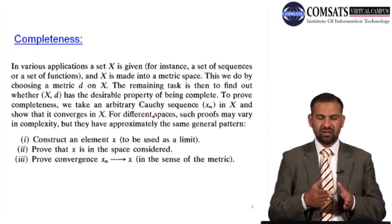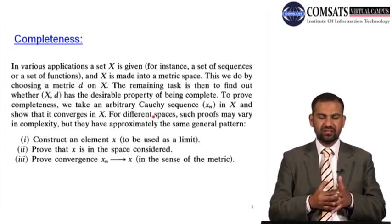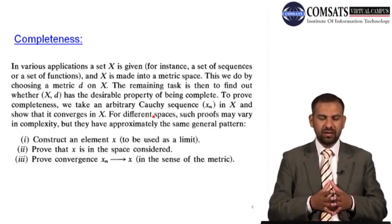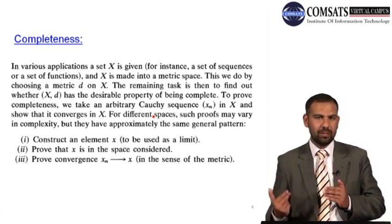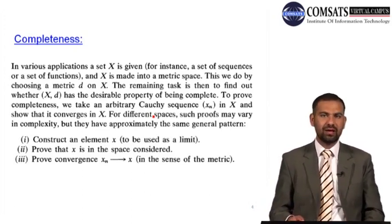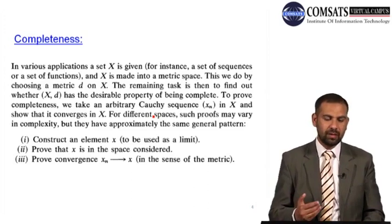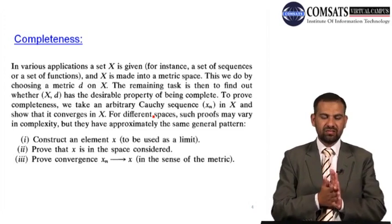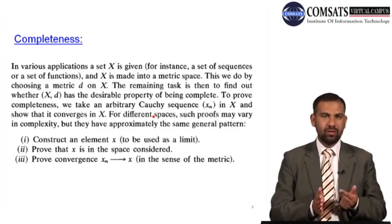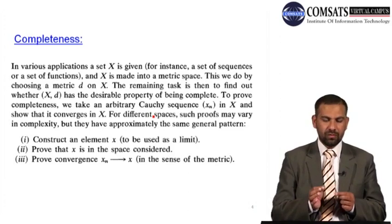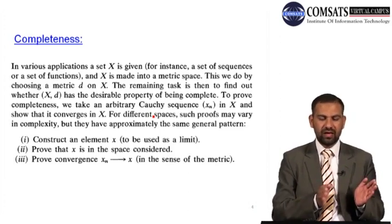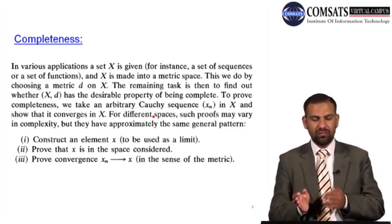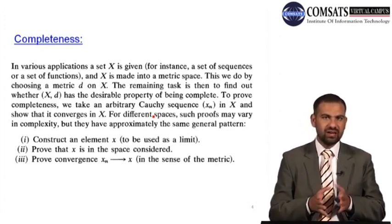For different spaces we discuss how a sequence converges. There are various types of complexity but the general pattern is always the same. The steps we follow to check completeness of a space are: first, construct an element x — choose a limit point such that the arbitrary sequence we take converges to that point, and that point must belong to the set x.